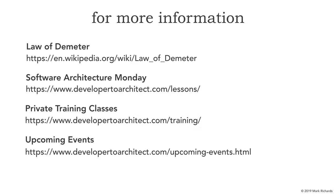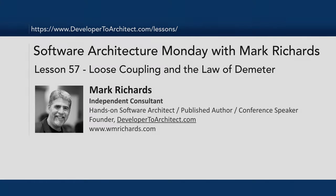You can get more information about the Law of Demeter by going to Wikipedia — I've given the link on screen. You can also get more information through Software Architecture Monday, where all these lessons are located. I offer three different private training classes: a three-day software architecture fundamentals class, a one-day microservices architecture and design class, and a one-day analyzing software architecture class. Check out my website for details, and I also have some of those available as public training, online, and at conferences. You can see where I'm speaking next on the upcoming events portion of my website. This has been Software Architecture Monday, Lesson 57, Loose Coupling and the Law of Demeter. My name is Mark Richards — thanks so much for listening.